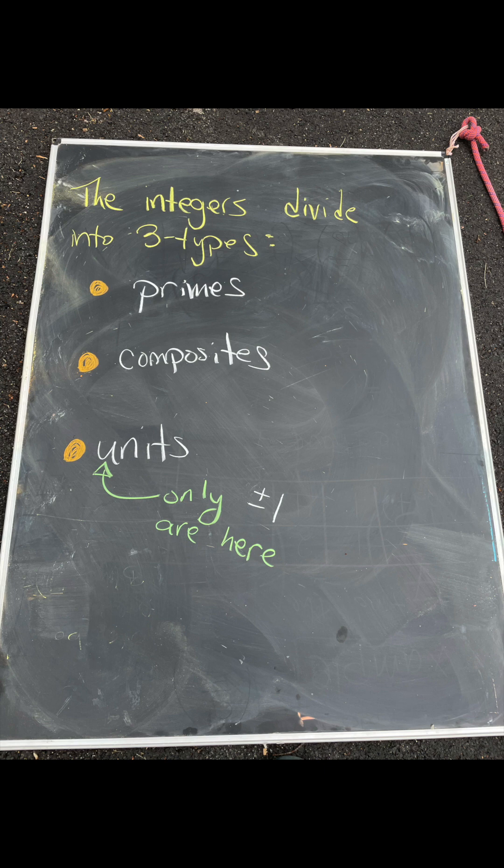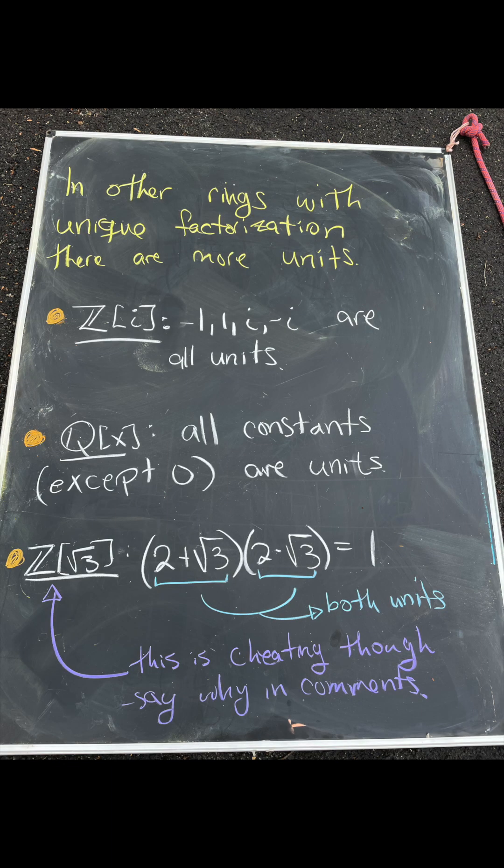It just happens that in the integers, there are only two units, plus 1 and minus 1. Now, if we zoom out a little bit and look at other rings that behave similar to the integers, we'll find more units.